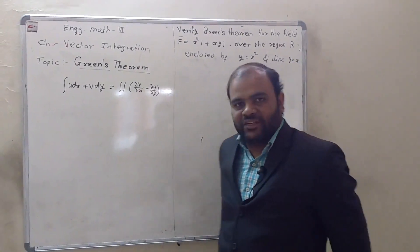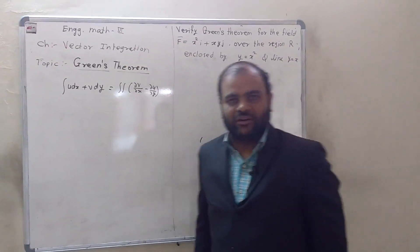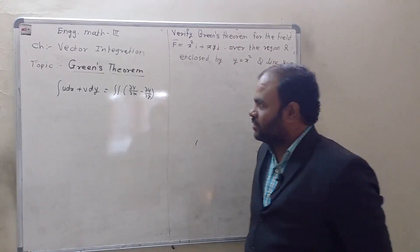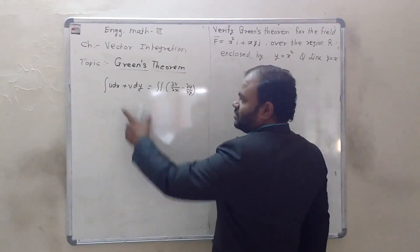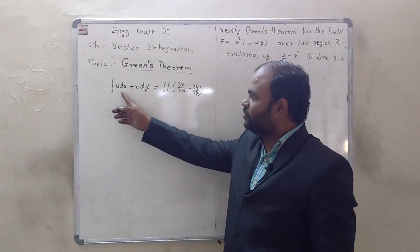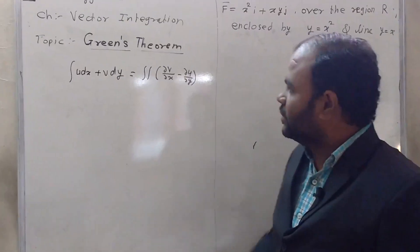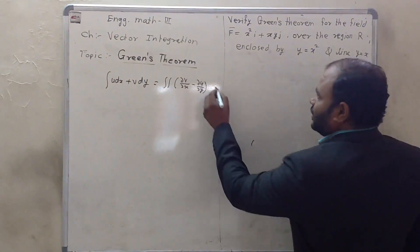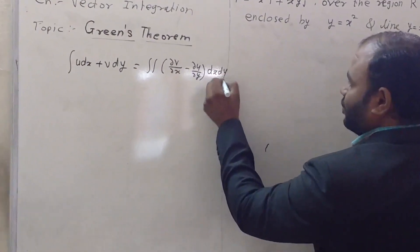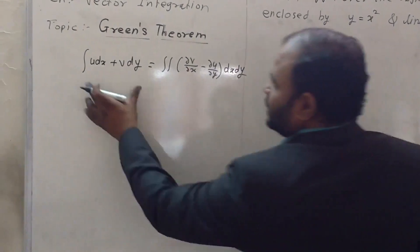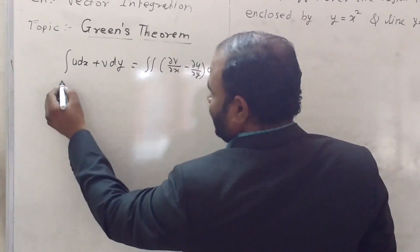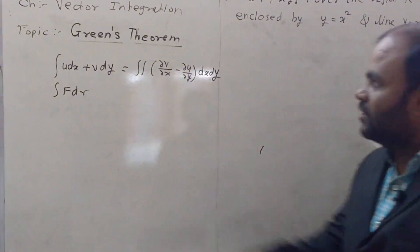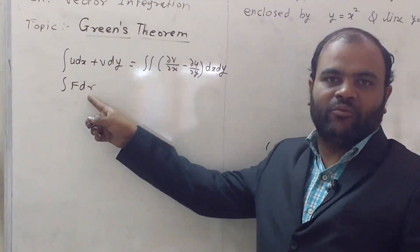By using Green's Theorem we can find out the work done on any particle moving on a given curve. The equation of Green's Theorem is: single integration of u dx plus v dy is equal to double integration of ∂v/∂x minus ∂u/∂y dx dy. This single integration u dx plus v dy is nothing but ∮F·dr, meaning Green's Theorem can be applied to find the value of work done.